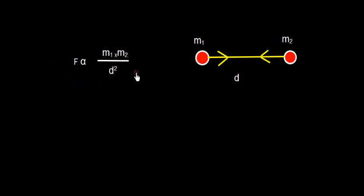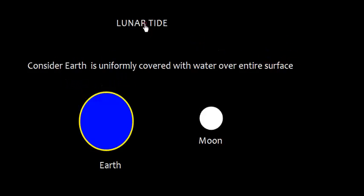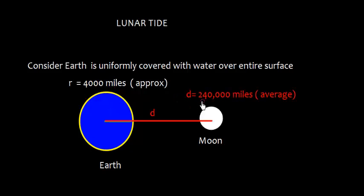There are two types of tide. First, let me discuss about lunar tide, where there is an effect due to moon. Here, let us consider that the earth is uniformly covered with water over entire surface, which is of course not the case, but seventy percent of the earth is covered by water.